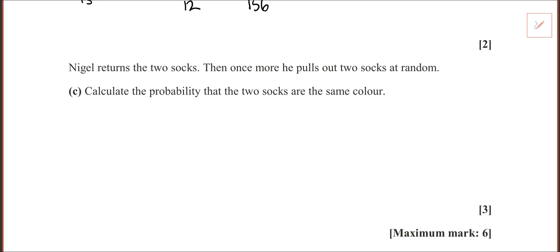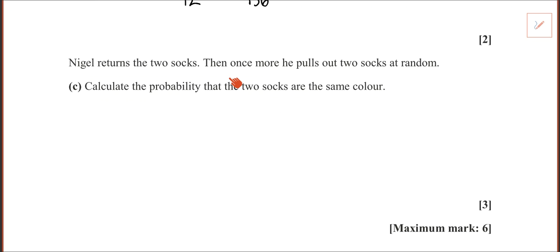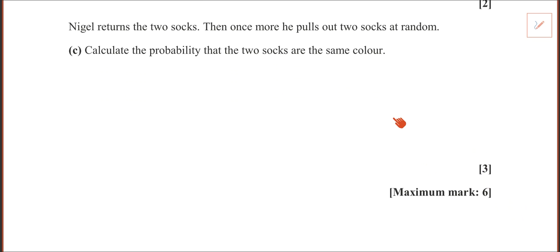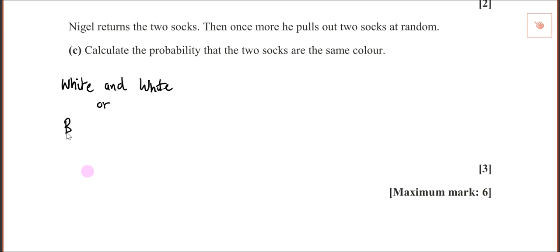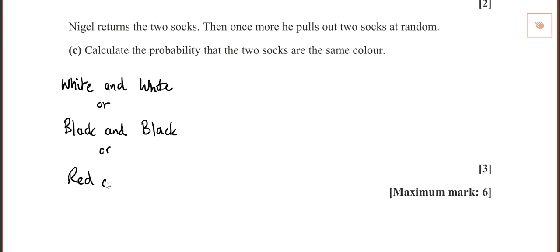Nigel returns the two socks. Once more he pulls out two socks at random. Calculate the probability that the two socks are the same colour. The options are: white and white, or black and black, or red and red. You wouldn't necessarily need to write all this — I'm just explaining.